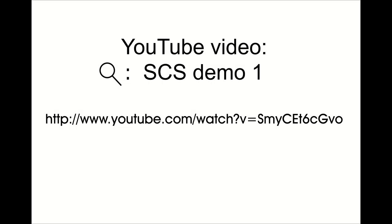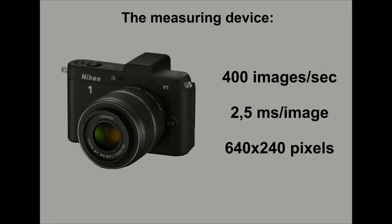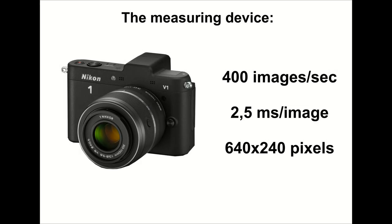Those who haven't seen our last recording yet, please have a look on YouTube before viewing the present video. The measurement is carried out with this digital photo camera which is able to record video with 400 frames per second speed. It means that the frames follow each other in two and a half milliseconds. This recording speed is almost two orders of magnitude smaller than the expected value. The camera makes the 400 frames per second recording at reduced 640 by 240 pixels, which is more than enough to evaluate.